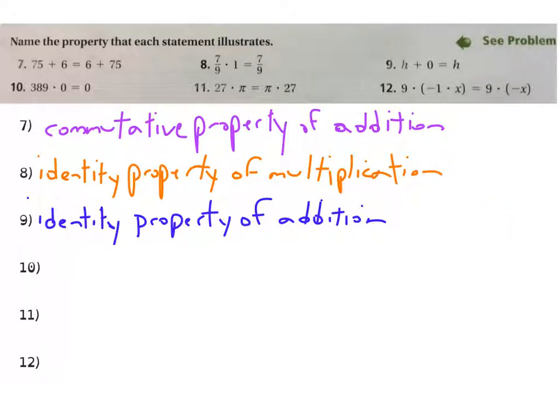Hopefully, that makes sense to you. Short answer, if you add zero to a number, it remains that number, and so that's an identity property. Now, number 10, 389 times zero equals zero. This is relevant. It's going to come up a lot. When you multiply something by zero, it turns into zero, whatever that thing was. And what do we call that? They call that the zero property. The zero property of multiplication. If you multiply by zero, you get zero. Zero property of multiplication.